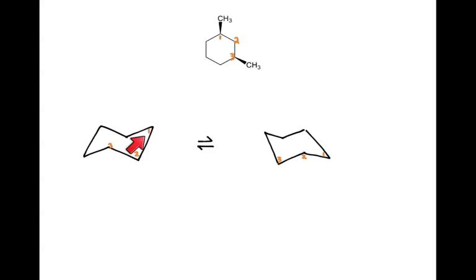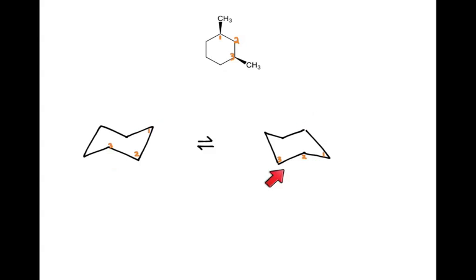Two things to point out: first, I pick the carbon furthest to the right as carbon 1 — that's pointing up. On the other chair conformer, the carbon furthest to the right is also carbon 1, going clockwise. It doesn't matter where you start numbering, just as long as you go clockwise consistently. For the chair conformer, I'm only going to focus on carbons 1, 2, and 3 — I won't draw in the hydrogens for 4, 5, and 6, though you can if you want to.